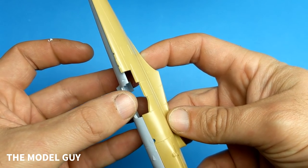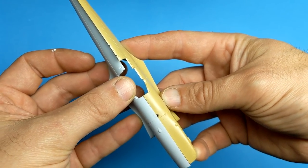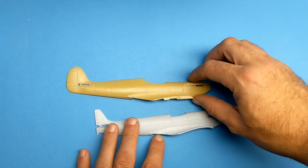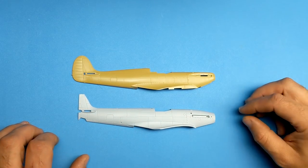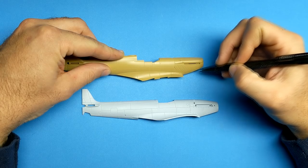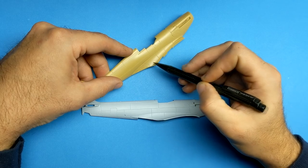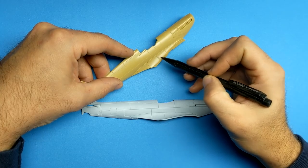Hello viewers and welcome back to another episode of The Model Guy. In this video I'll be tackling one of my bigger projects where I try to convert a Mark 15 Seafire using the Airfix Mark 17 Seafire and a Tamiya Mark 5 kit. After watching Paul Budzik convert a few Spitfires on his channel, I decided to take a step from scratch building to doing something a bit bigger.